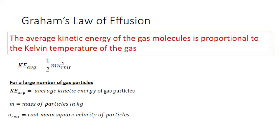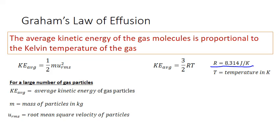We also know from kinetic molecular theory that the average kinetic energy of the gas molecules is proportional to the Kelvin temperature of the gas, and this can be expressed mathematically. The average kinetic energy of those gas molecules equals three halves times R — the ideal gas constant — times temperature in units of Kelvin. The form of the ideal gas constant used here is slightly different because units have been converted through dimensional analysis from liters times atmospheres per mole to units of joules. So instead of 0.08206, we use 8.314 joules per Kelvin. We can set these two equations equal to each other since they're both equal to average kinetic energy, and now we can solve for the average velocity, u_RMS.